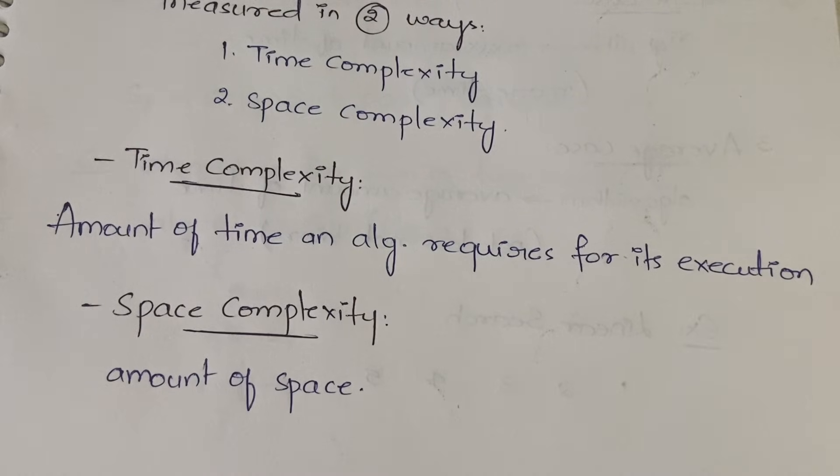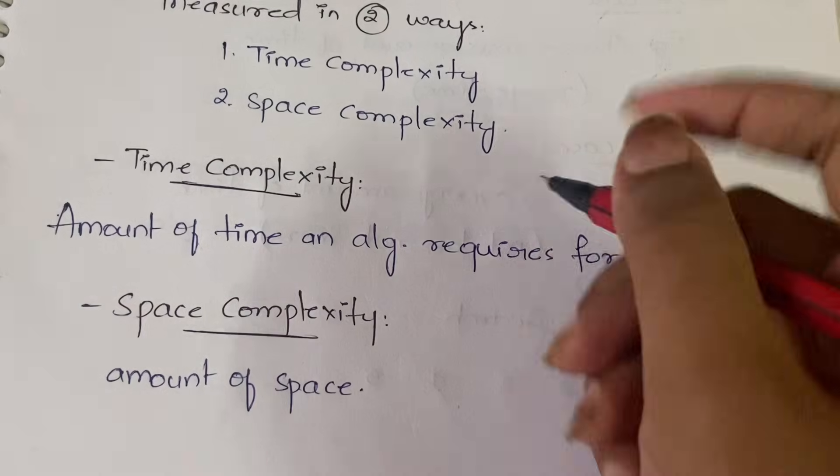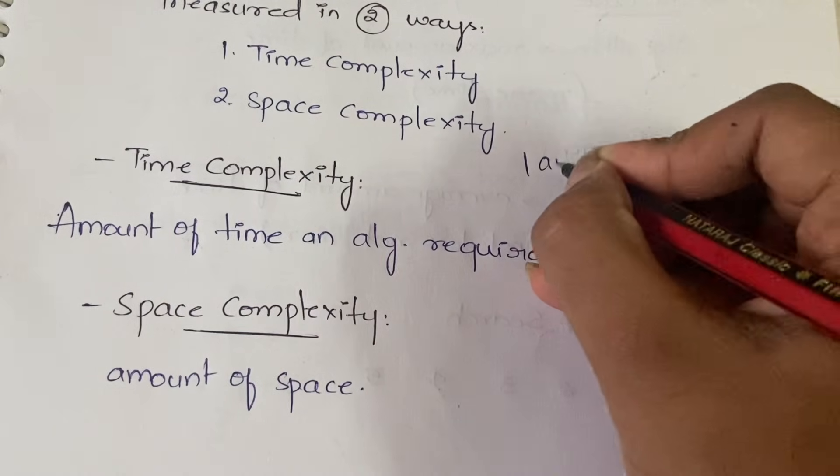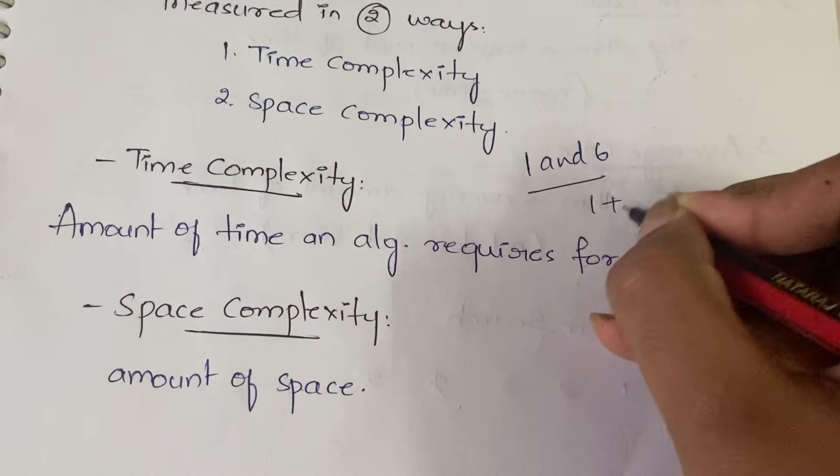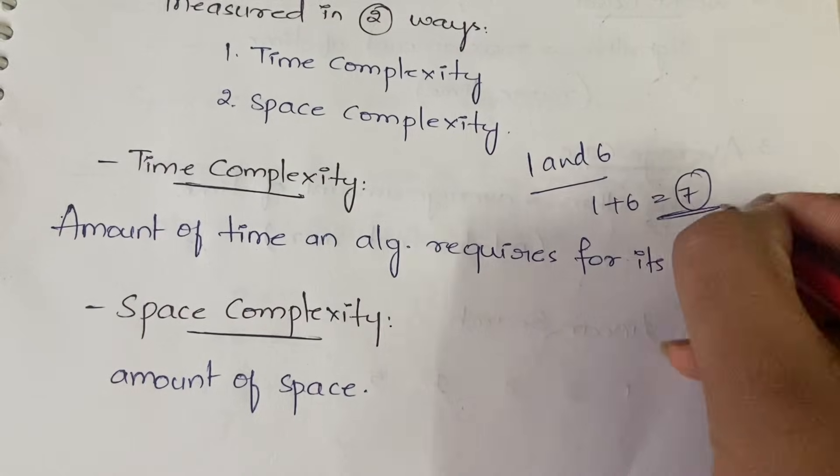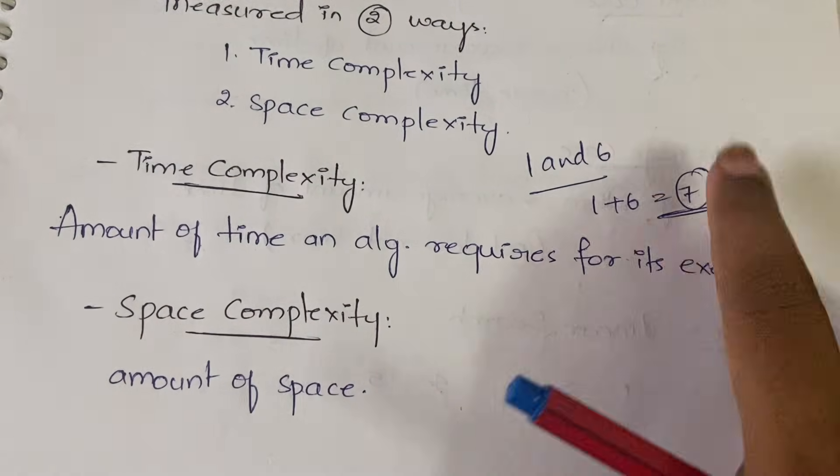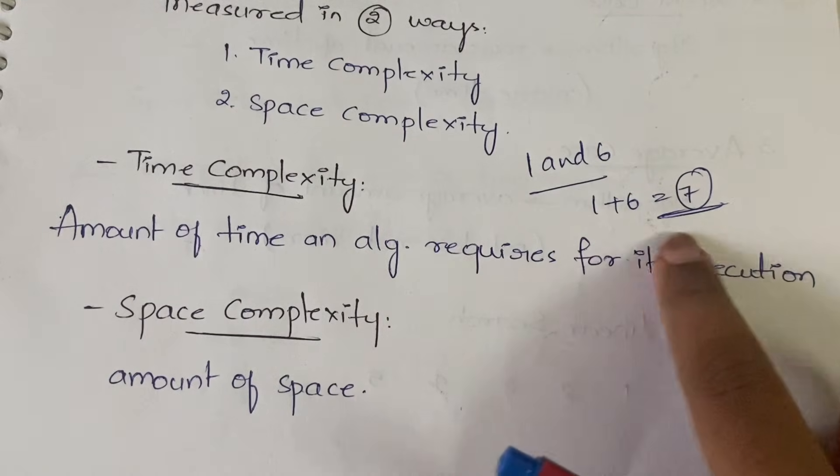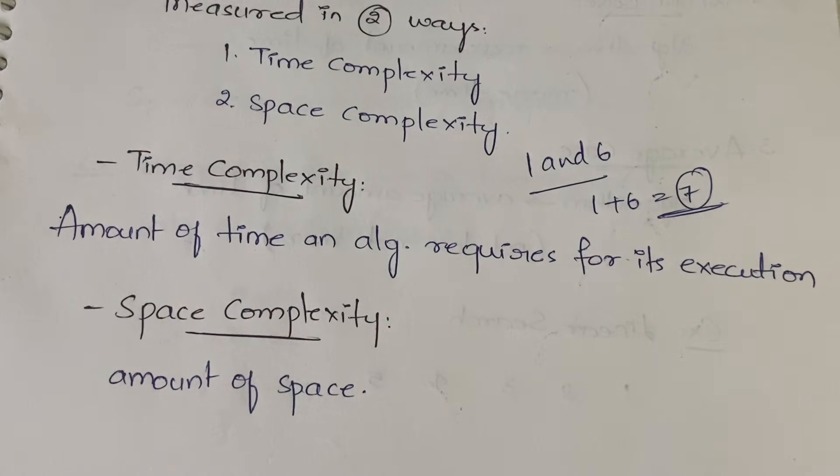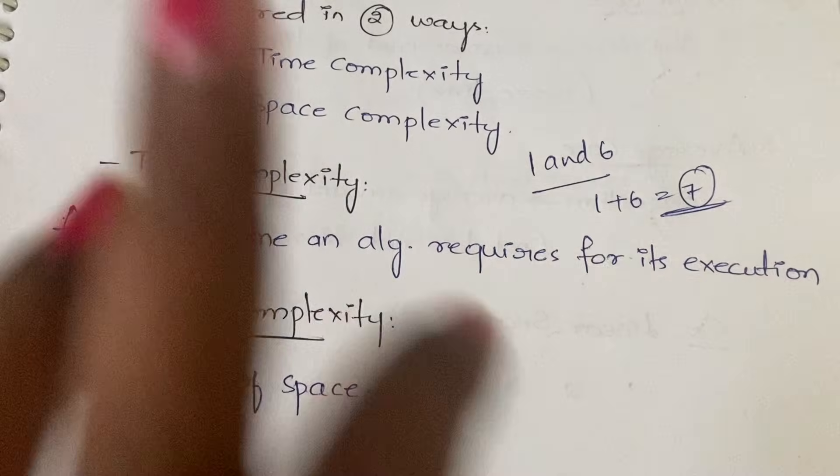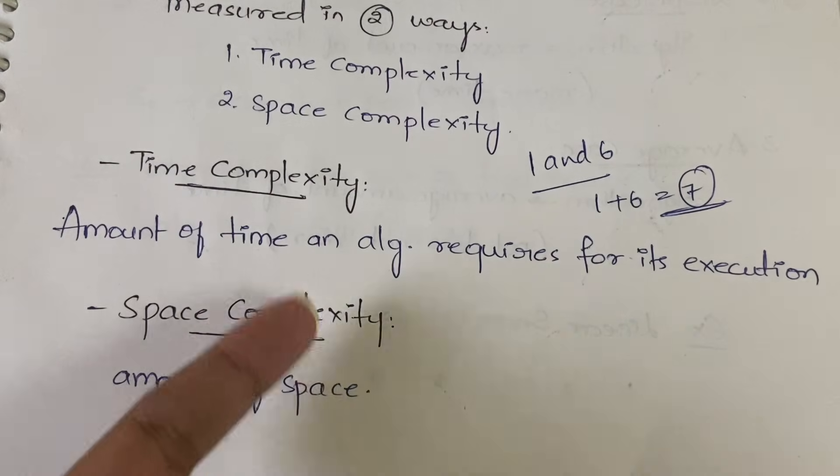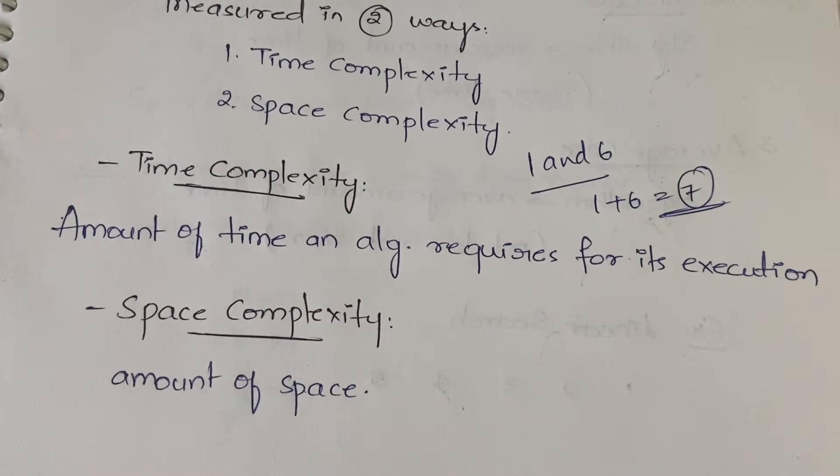Time complexity means amount of time an algorithm requires for its execution. Suppose you have an algorithm which is to add two numbers. You have two numbers like one and six. When you add one plus six, what do you get? Seven. So once you add those two numbers and get seven, then the execution of algorithm is completed. In order to complete its execution, how much time it is taking is called time complexity.